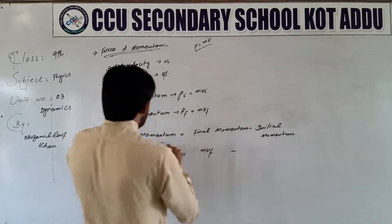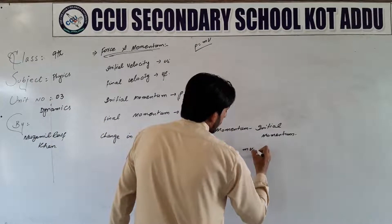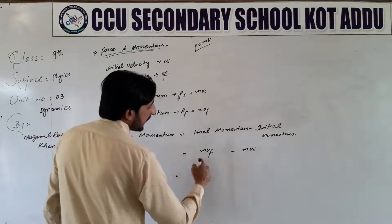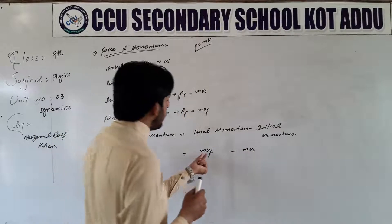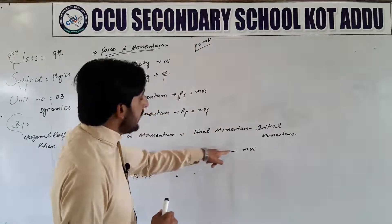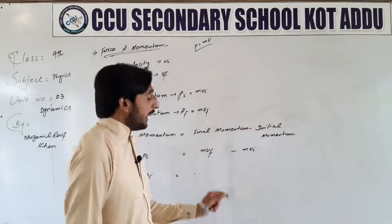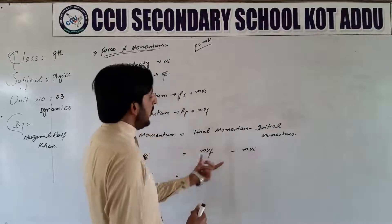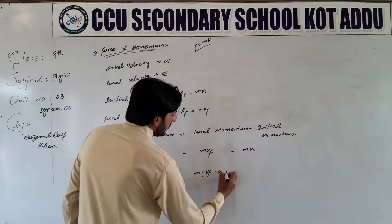Ab me aapki galti kiya hoti dekhata hun — yahan par bhi mv hai, yahan par bhi mv hai, aapne common le liya. Lekin yeh nahi dekha ki yeh final velocity hai, yeh initial velocity hai — dono ki velocities ke andar difference hai, same nahi hain. Is liye yeh v isme se common nahi ho sakta, kyunki yeh velocities ko zahir kar raha hai — final aur initial velocity respectively. Toh jahan par common hai, woh sirf m hai. Toh kya ho gaya: m into (vf minus vi).